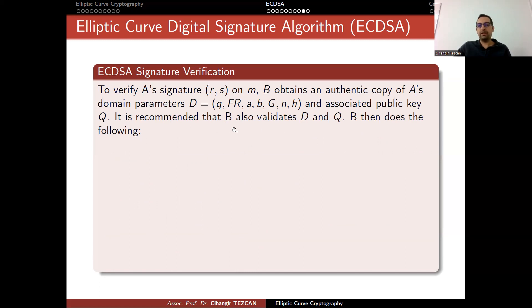We recommend that b also validates d and q. You first check if the domain parameters are correct. If there's really an elliptic curve like this, then they check if q is really a public key, which means that it is a point on the elliptic curve. We are saying this because if you don't do this, then you go back to the OpenSSL bug, which creates an infinite loop. Once we verify this, then b starts doing calculations.